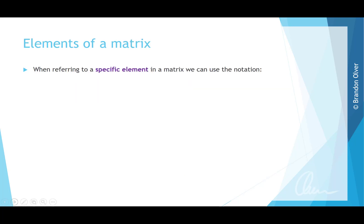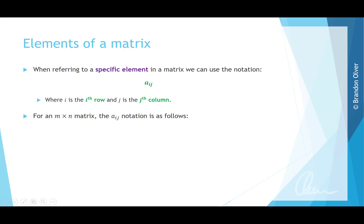When referring to a specific element in a matrix, we use the notation A-IJ, where I is the Ith row and J is the Jth column. For an M times N matrix, the A-IJ notation follows a pattern: as we go across the columns, the row number stays the same.